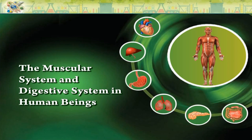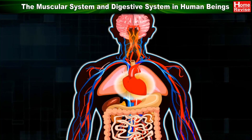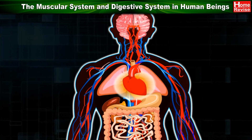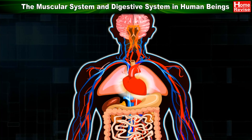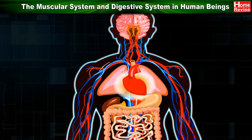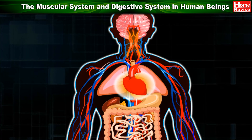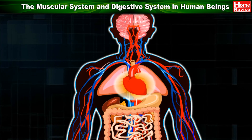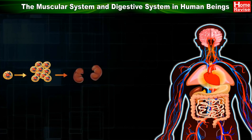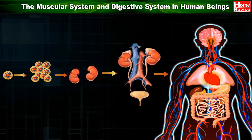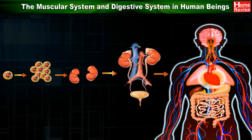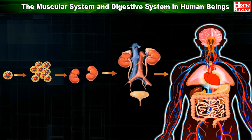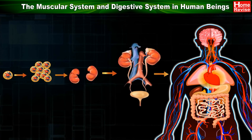The muscular system and digestive system in human beings. Let's recall a few things. What is meant by organ system? An organ system is a group of organs that work together to perform one or more functions.